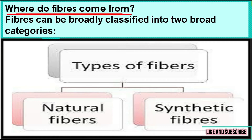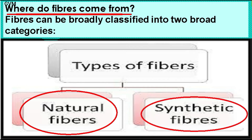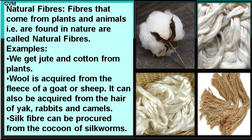Where do fibers come from? Fibers are usually obtained from two main sources — plants and animals — and these are called natural fibers. Examples include silk, cotton, and jute. Apart from natural fibers, there are also synthetic fibers that are synthesized by humans using machines and technologies in textile industries. These are called synthetic fibers — like rayon, nylon, and polyester.